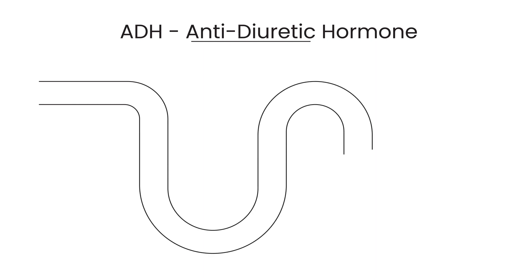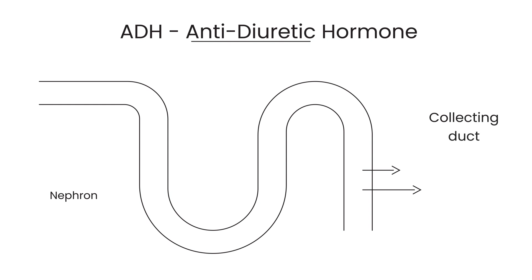Let's draw a diagram of the nephron, which is the unit component of the kidney — there are a million or more in the kidney. ADH works on the part of the nephron known as the collecting duct. What ADH does is bring water back into the bloodstream from the urine, so the urine will therefore be concentrated, as a lot of water has been returned to circulation.